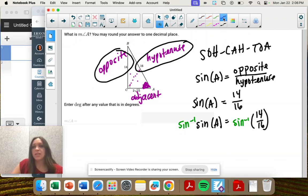So what happens is sine and sine inverse are opposites. They cancel out and we're left with just A. And then this we put in a calculator.